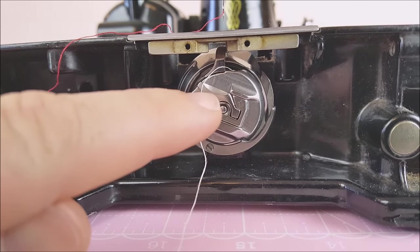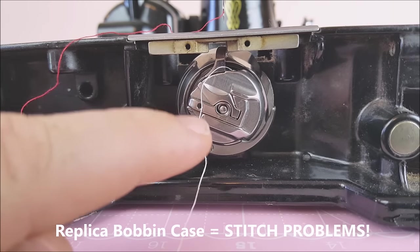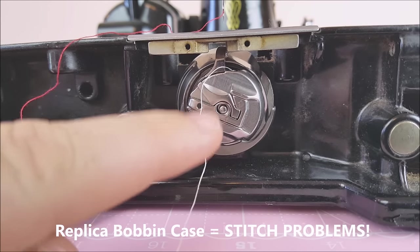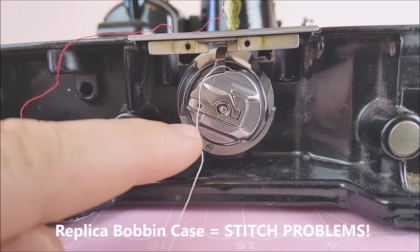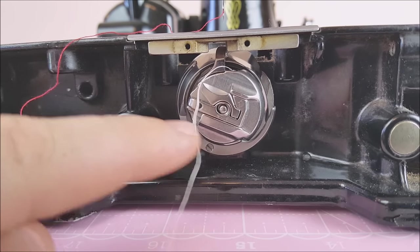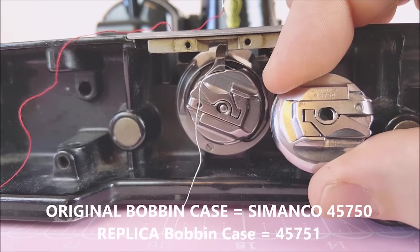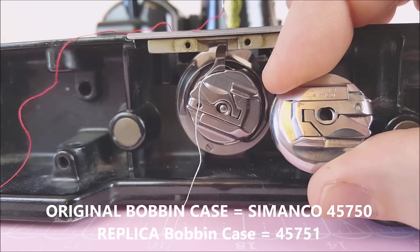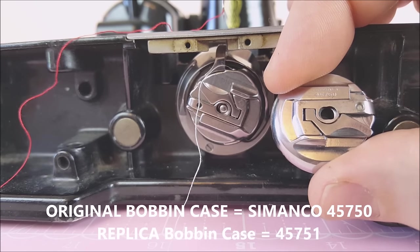Okay, I've switched out this bobbin case and I've put a reproduction in because these are often a cause of great frustration and problems here. This bobbin case here is not marked at all. Sometimes the reproductions are marked 45751. The originals like we had in there earlier are marked 45750 and they also say simanco on them either on the outside or the inside.